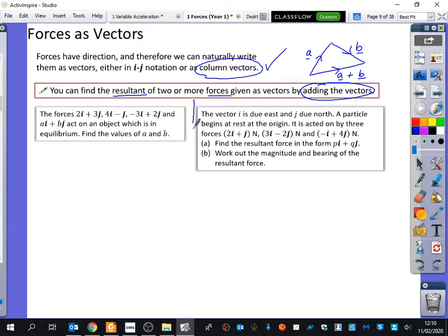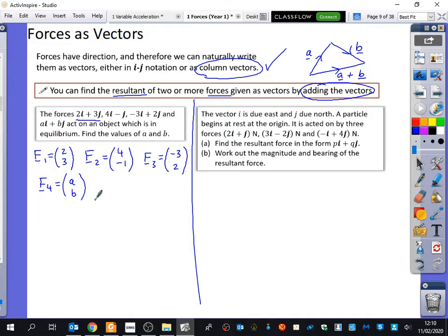So I'm going to do two examples here. We can find the resultant of these forces by adding the vectors together. So we've got the forces, 2i plus 3j, which is (2, 3). I'm going to call that F1. I've got another force, F2, which is 4i minus j. And I've got another force, F3, which is (-3, 2). Oh, and I've got another force, which is AB. They act on an object which is in equilibrium. If it's in equilibrium, what do you know about the resultant force? It's zero. Good.